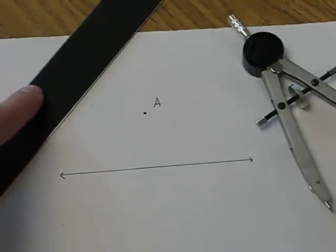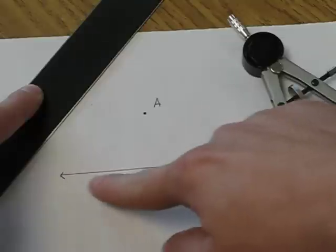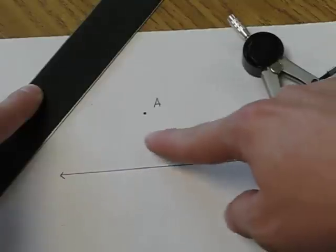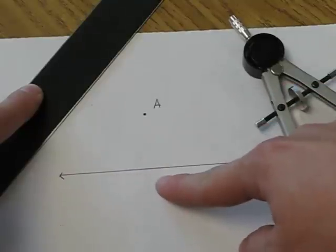In this construction we're going to construct a line perpendicular to a given line but passing through a point that is not on our line.